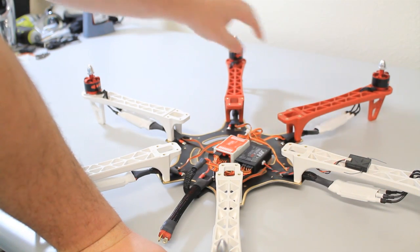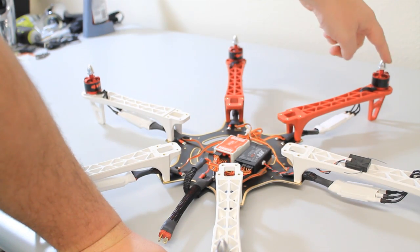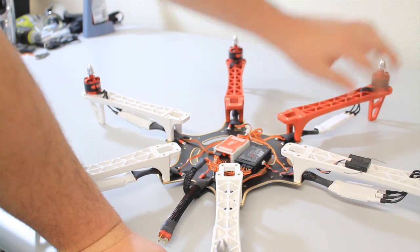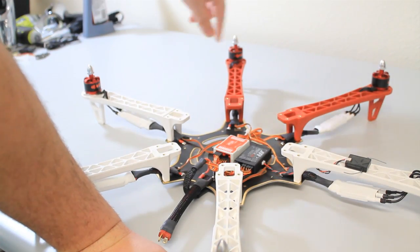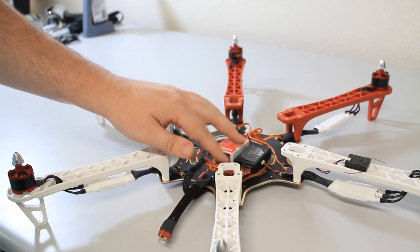The even motors are going to go clockwise and the odd motors are going to go counterclockwise. So this would be one, counterclockwise, two, clockwise, counterclockwise, clockwise, etc. We got that all done.